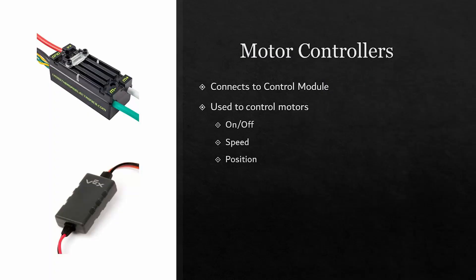Motor controllers do exactly what you think they would do — they control the motors. They determine whether a motor is on or not, and depending on the motor it is being used for, the motor controller controls a different aspect of that motor. With a regular motor, it determines the speed and direction that the motor is spinning in.